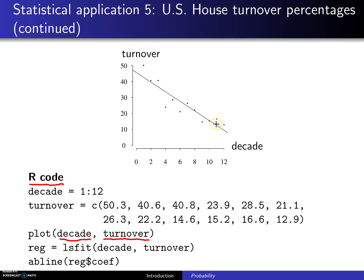That is known as a scatter plot of the data, and when you look at those 12 values, you do see that there is somewhat of a linear relationship — maybe a little more of a quadratic relationship — but in any case, you can fit this using the R function called LSFIT, which stands for least squares fit. By the way, there is a more general and better package to use if you want to use the function LM, which stands for linear model. But in any case, if you use LSFIT with decade as the independent variable and turnover as the dependent variable, sitting inside of REG will be the estimated slope and intercept.